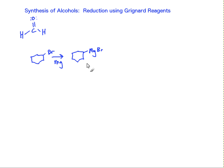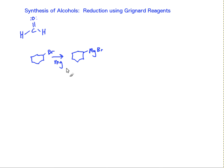Remember doing this in lab? You ground up your magnesium, put it in with your alkyl halide, and you generated this coffee-colored Grignard reagent — in your case it was phenylmagnesium bromide. We were very careful about this. We didn't want any water in our reaction because this reactive Grignard reagent is very reactive; it would even react with water instead of reacting with our carbonyl.